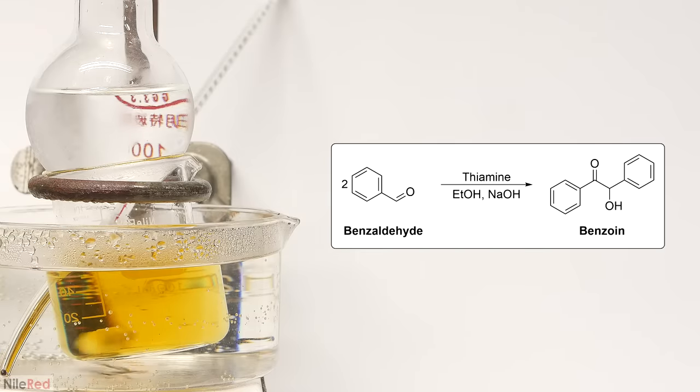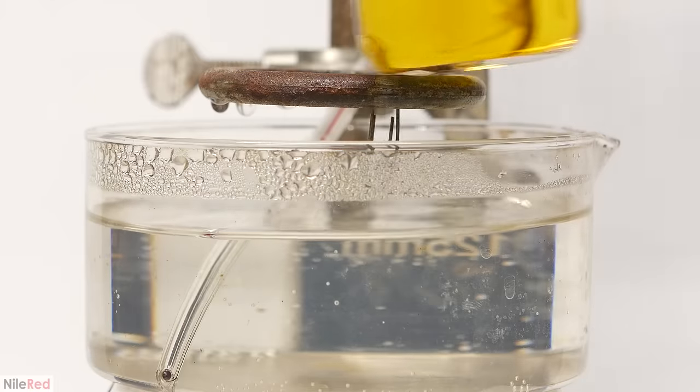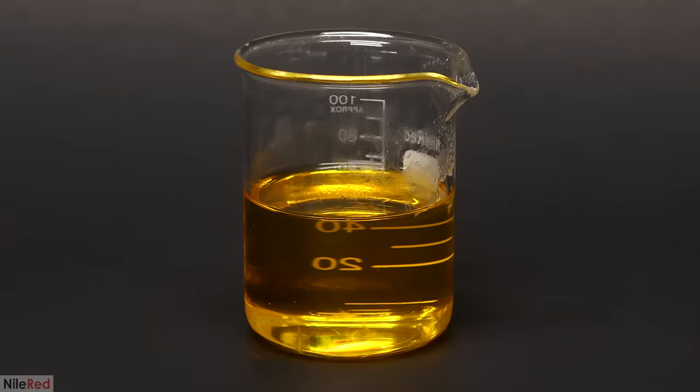As I mentioned earlier, bitter almond oil is almost entirely made of benzaldehyde. And under these conditions, in the presence of the thiamine catalyst, two benzaldehyde molecules will condense together to form benzoin. I left it in the water bath for about 90 minutes, and then I took it out and let it cool. As it cooled to room temperature, benzoin slowly crystallized out.